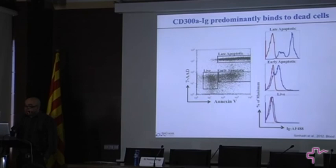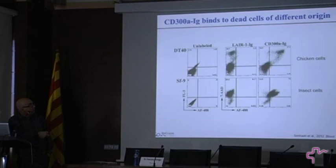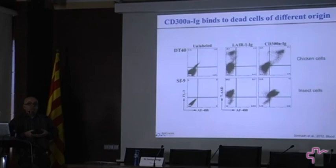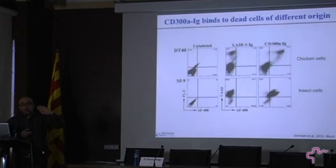Another interesting result was that if he took cells that are evolutionarily very distant — like cells from chicken or even insect cells — CD300A also bound to those dead cells. So what this tells us is that the ligand is something evolutionarily conserved. As you probably know, apoptotic cells expose on the outer leaflet of the plasma membrane phosphatidylserine and also phosphatidylethanolamine — two phospholipids that in a live resting cell are normally not expressed on the outer leaflet.